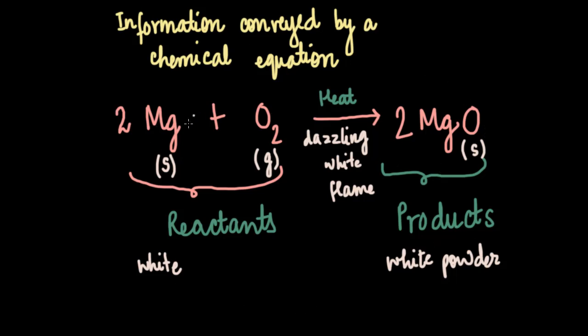So based on this, let us try and list down the many things that a chemical equation can convey. The first thing would be the reactants and the products.